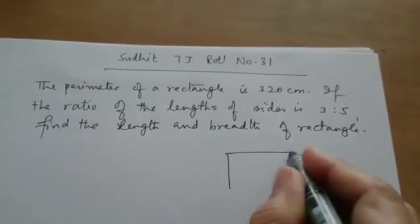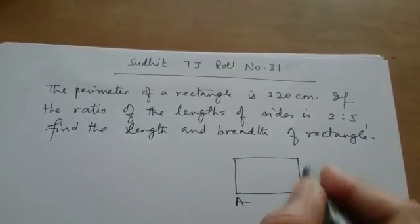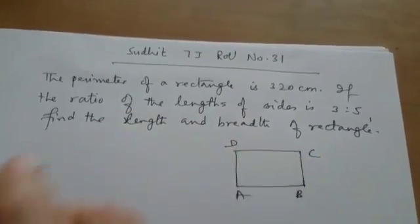Okay, I am making a rectangle here and assuming it to be ABCD. Tell me what is given in this question.